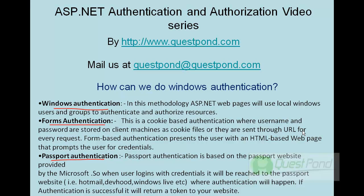There is also Anonymous Access, where you do not want any kind of authentication to be supported. So in summary, there are three kinds of authentication in ASP.NET: Windows, Forms, and Passport. In this session we will look in depth at how to implement Windows Authentication.